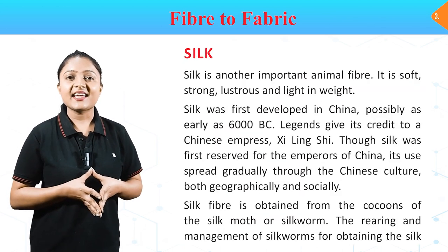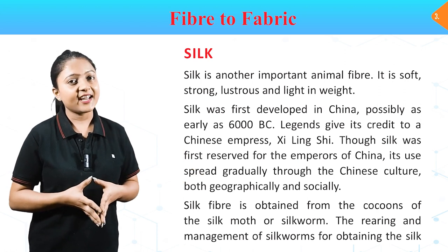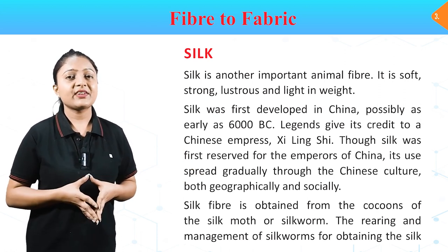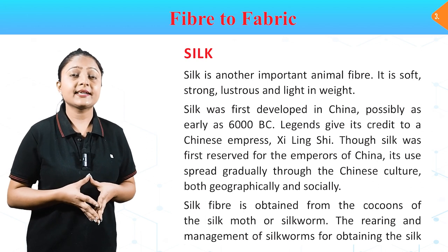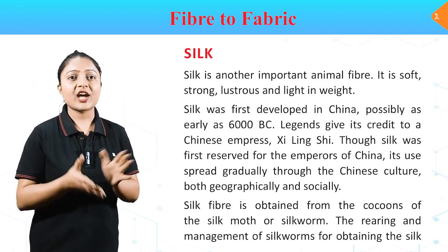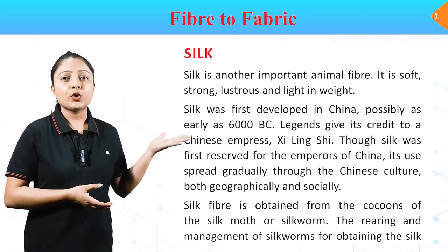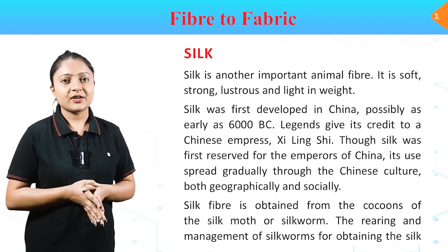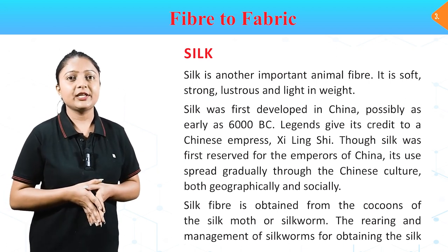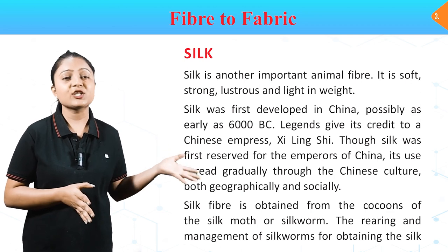Silk is another important animal fiber. It is soft, strong, lustrous and light in weight. Silk was first developed in China, possibly as early as 6000 BC. Legend gives its credit to a Chinese empress, Shi Ling Shi. Though silk was first reserved for the emperors of China, its use spread gradually through Chinese culture, both geographically and socially.